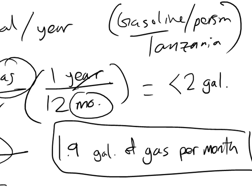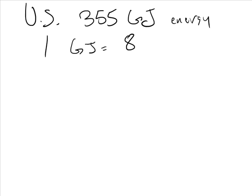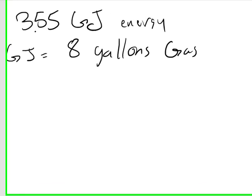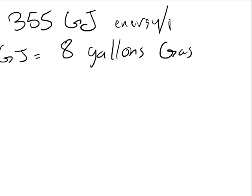Same strategy for the people in the U.S. People in the U.S., it said, on average, used 355 gigajoules of energy. And we have the same conversion. 1 gigajoule of energy took 8 gallons of gas. And this is 355 gigajoules of energy per person per year.